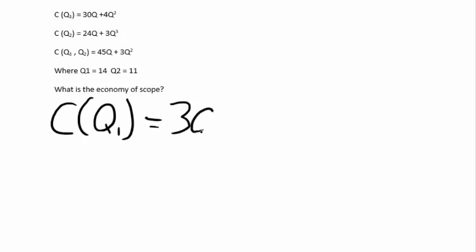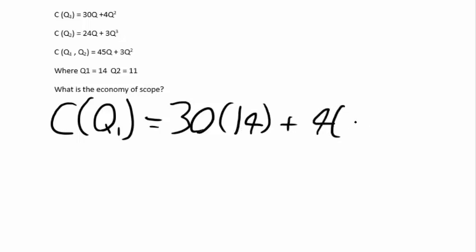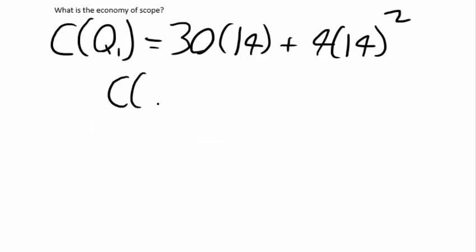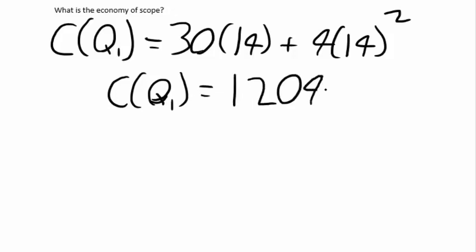We will take the same steps as in the previous problem. The cost for quantity 1 equals 30 times q1, which is 14, plus 4 times q1 squared, which is 14 squared. We find the cost for quantity 1 equals 1,204.